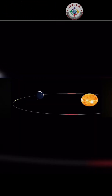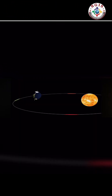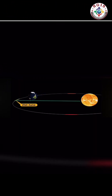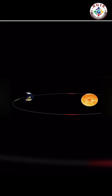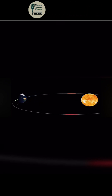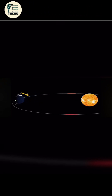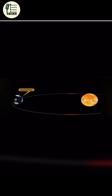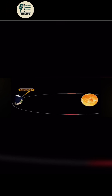Summer Solstice: When the northern pole is tilted most directly towards the Sun, it's summer in the northern hemisphere.